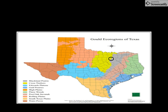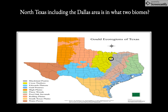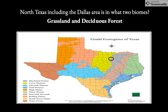We actually live in a mix of two different biomes here in North Texas — grassland and deciduous forest. Where we live is kind of a mix of both, and you can tell that this area has some grassland and some deciduous forest.